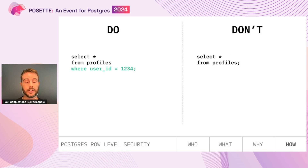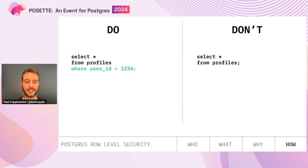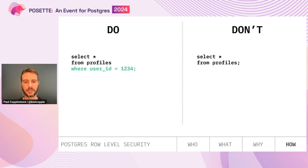One final performance tip: even though RLS acts as an implicit WHERE clause, you should always still specify your own WHERE statement when selecting from a table. I thought it was cool that you could write blanket SELECT statements and only get back accessible data, but for performance reasons you want the WHERE clause — it cuts down the amount of data before the RLS rules are applied, making queries much faster.